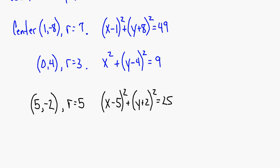For the equation X squared plus Y squared equals 100: the X and Y coordinates of the center are (0, 0) — that's the origin — and the radius would be equal to 10.